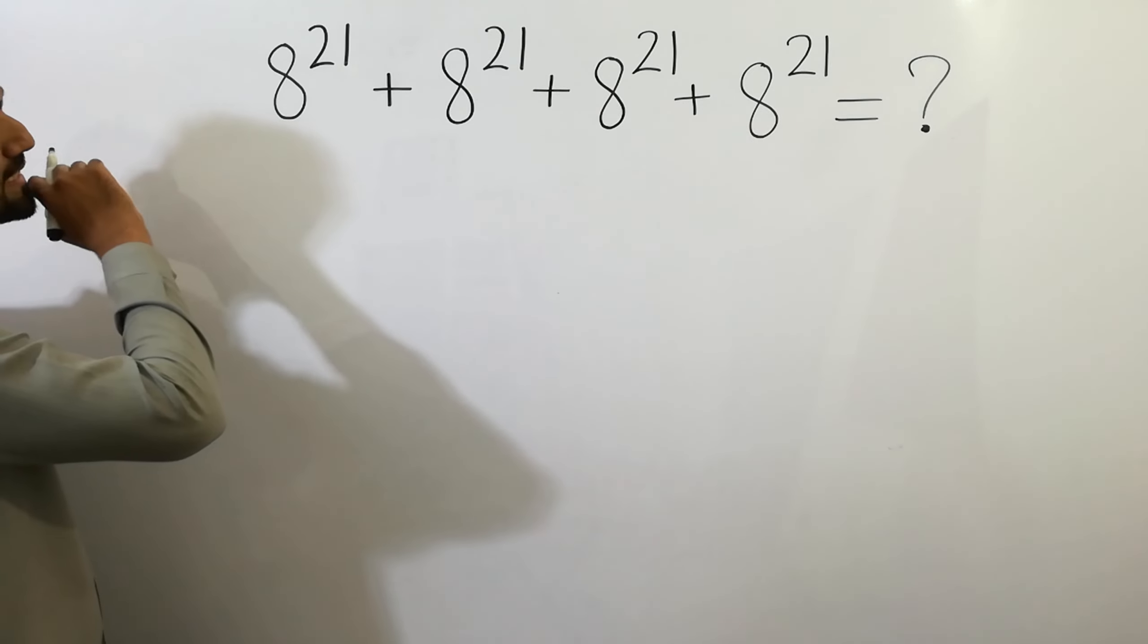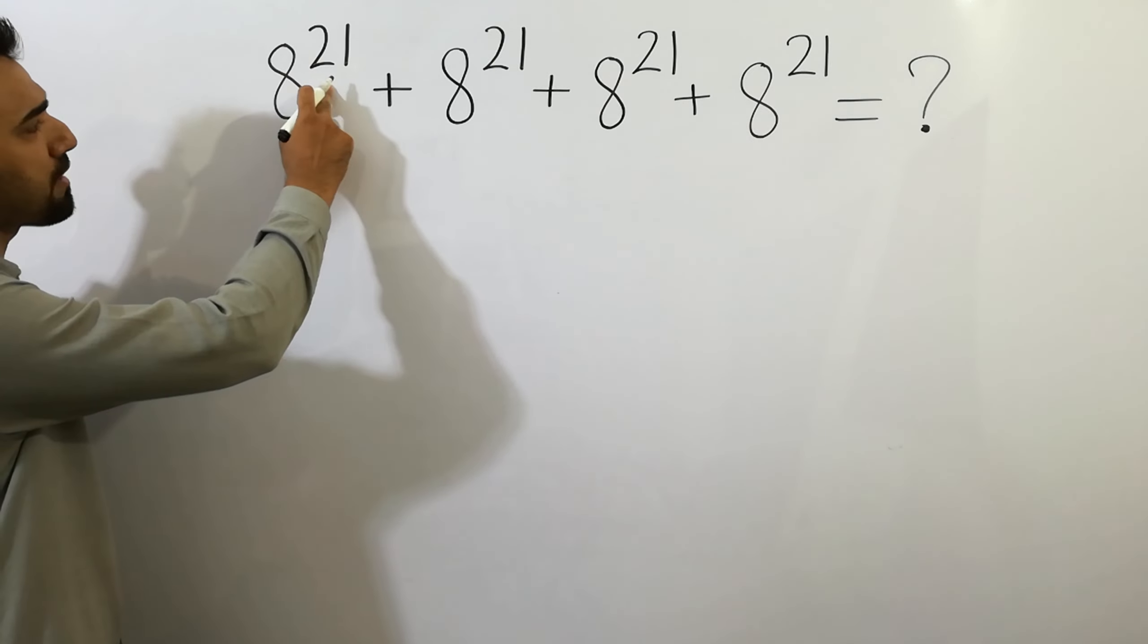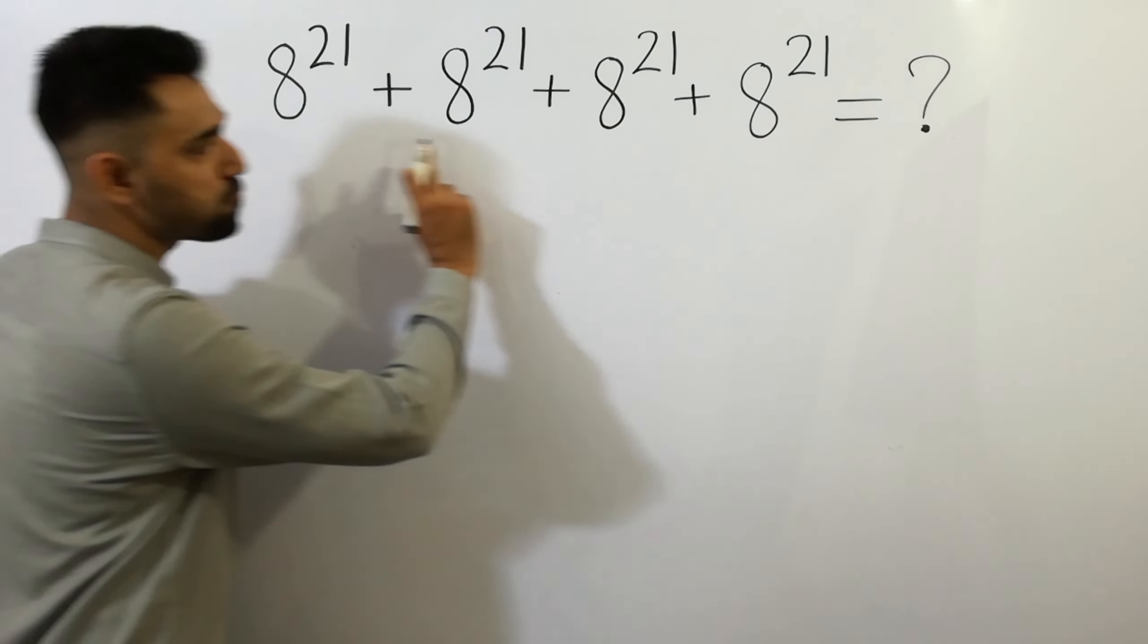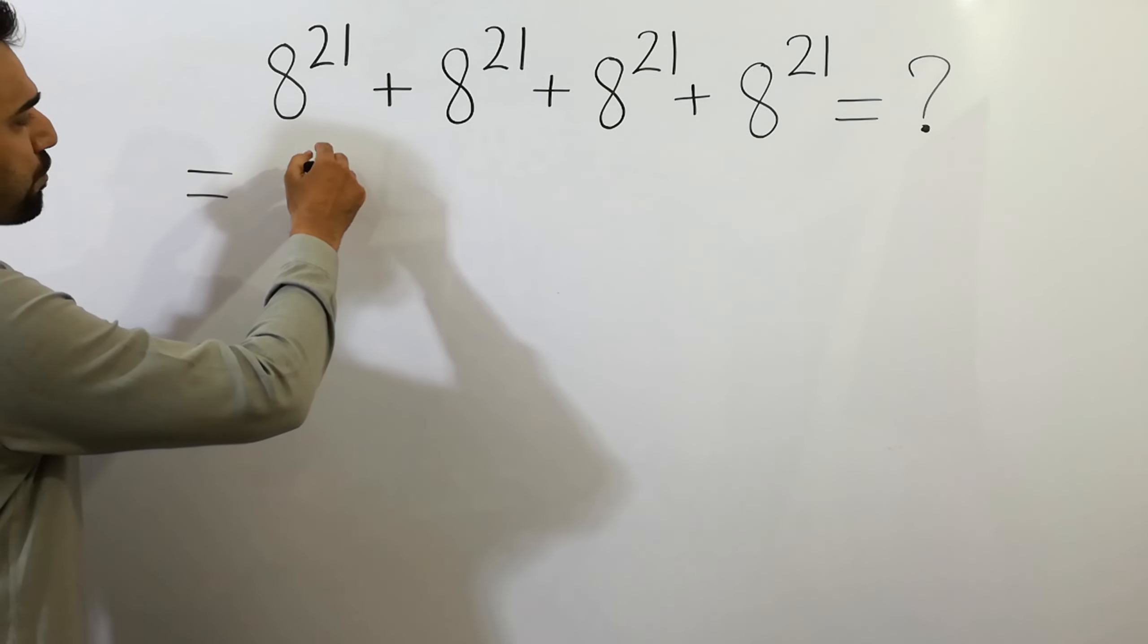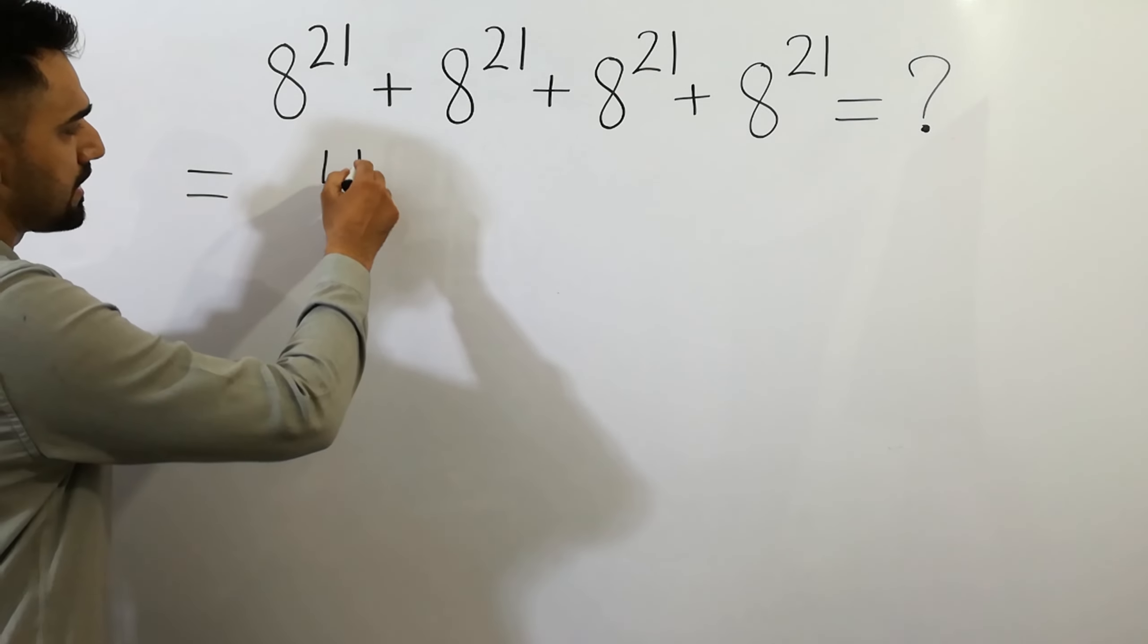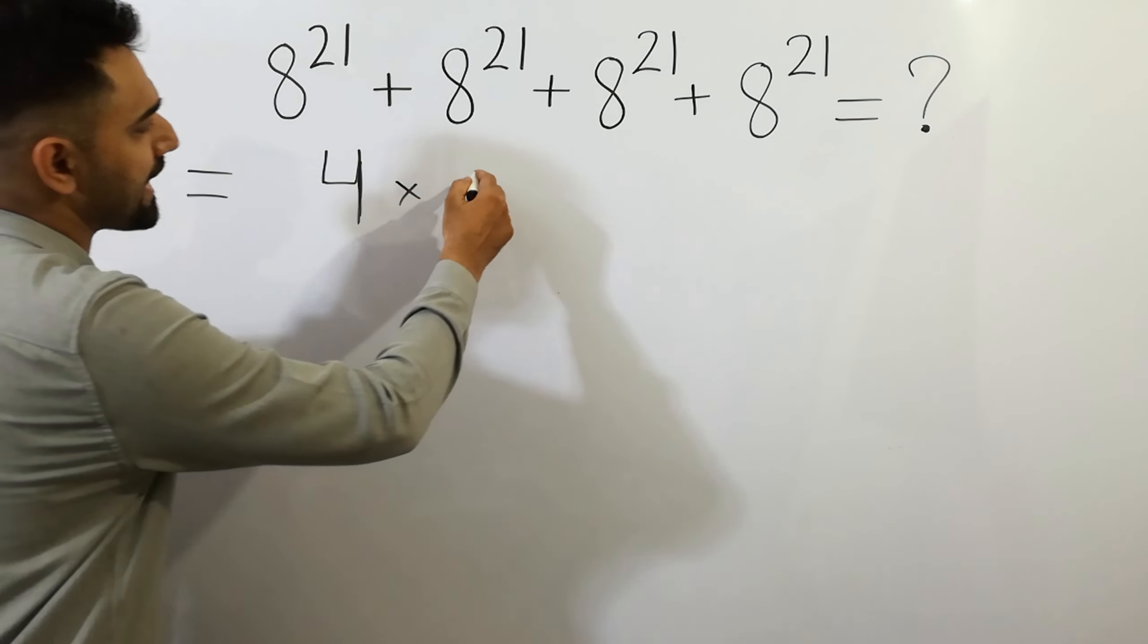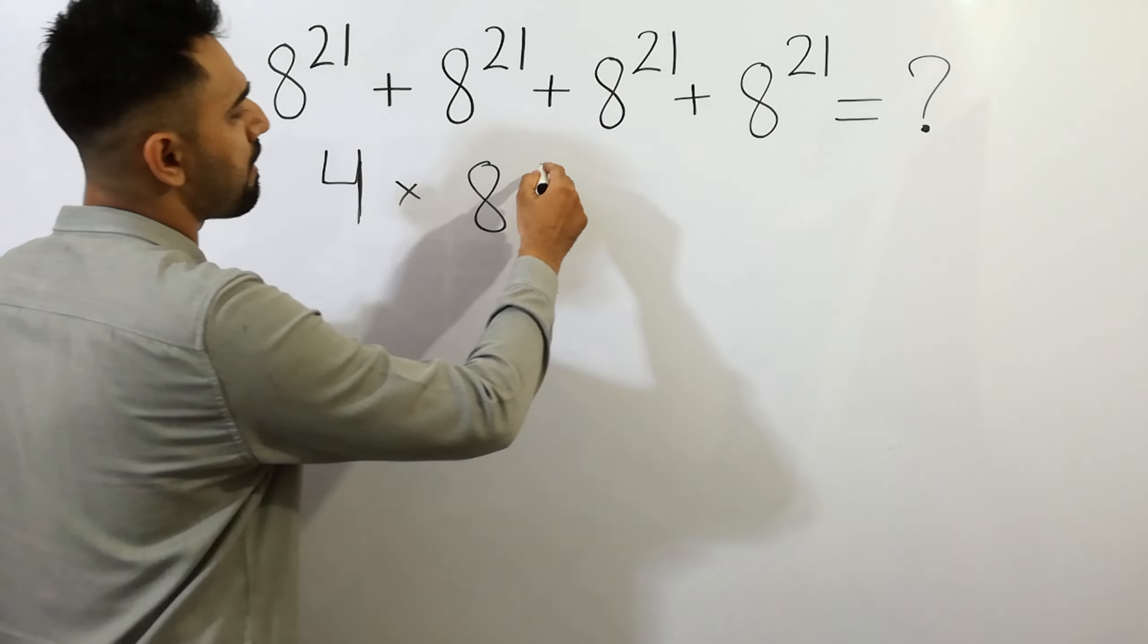As you can see here, 8 to the power 21 is repeated 4 times. So it is possible to write it as 4 times 8 to the power 21.